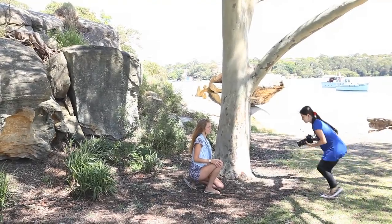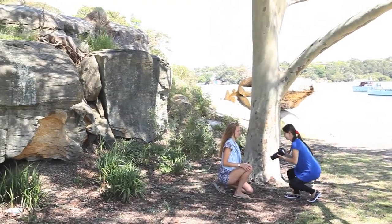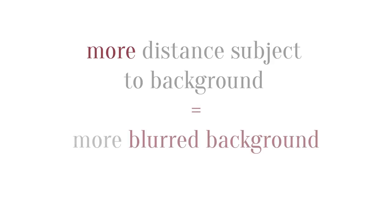Now let's look at the distance between the subject and the background. In this first shot the subject is two to three meters from the rocks, using a 70 millimeter lens at f5.6. In the second shot the subject is less than a meter from the background. So clearly, the greater the distance between the subject and the background, the more blurred the background will be.